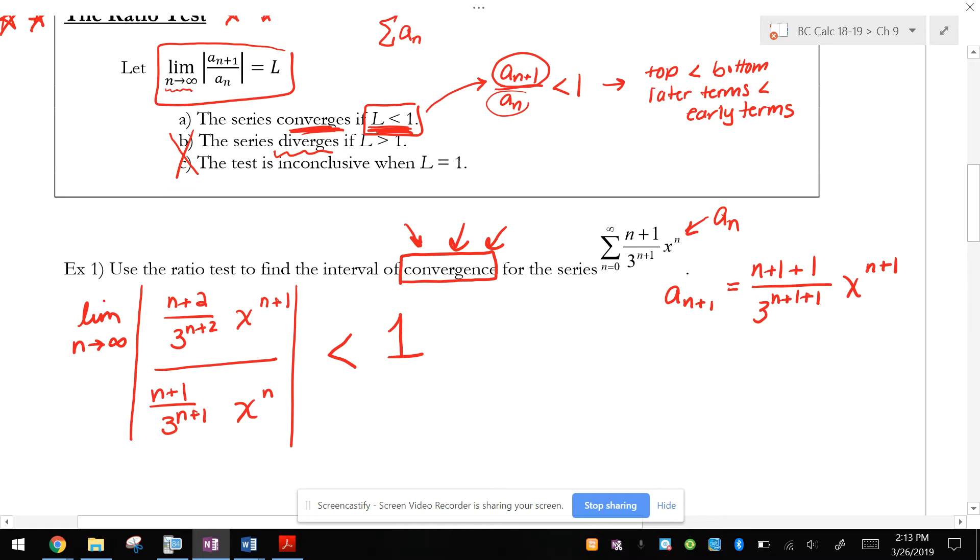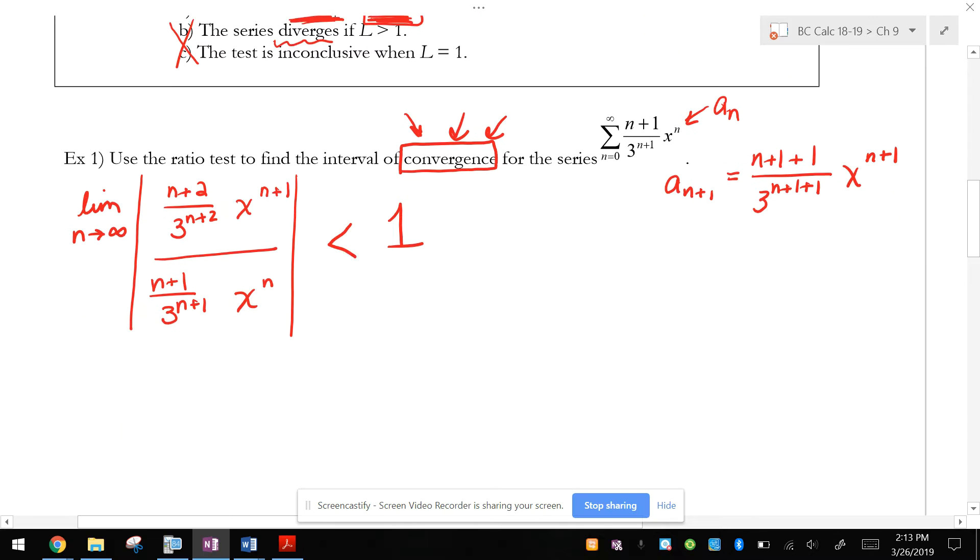And if I want something to converge, that means I need this limit to be less than 1. So I'm going to make it less than 1 and solve for x. So the ratio test basically says take your series a sub n plus 1, divide by a sub n, set it less than 1, and then solve for x. That's what we're going to do.